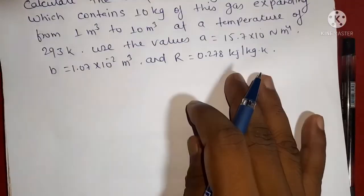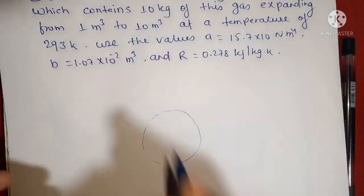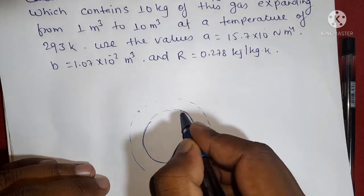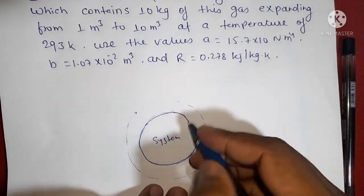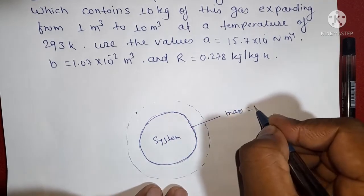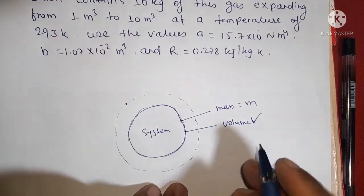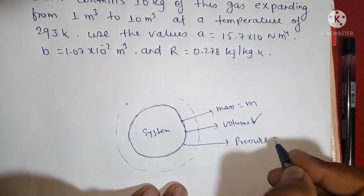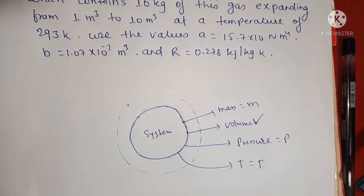Question बोल रहा है कि एक system है — suppose मैं मानता हूँ यह एक system है और इस system में जो gas है, वो gas expand कर रही है। यह इसकी initial state है। System का mass is M, volume is V, pressure is P, temperature is T है। हमें PDV work यानी displacement work find out करना है।